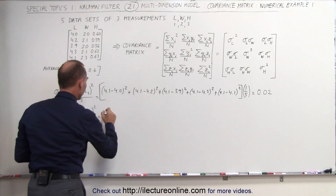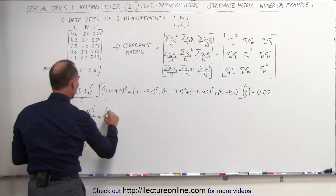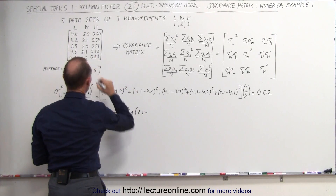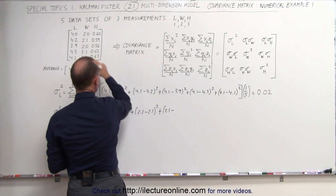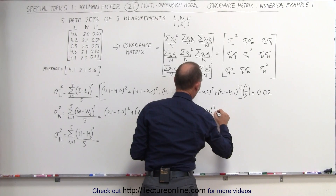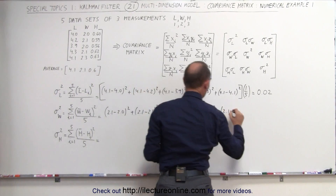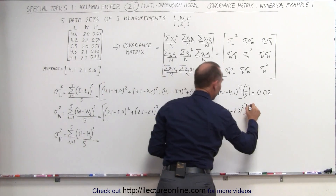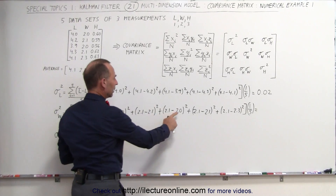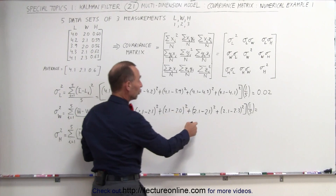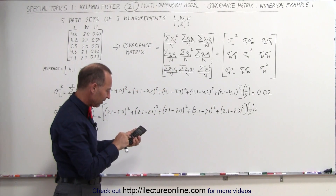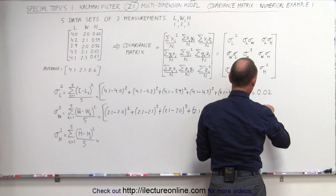We do the same for the width measurements. The average is 2.1. We subtract the first reading 2.0 and square that; plus the average minus the second reading 2.1, squared; plus the average minus the third reading 2.0, squared; plus the average minus the fourth reading 2.1, squared; plus the average minus the fifth reading 2.3, squared; and then divide the whole sum by five. We get 0.01 plus 0 plus 0.01 plus 0 plus 0.04, divided by five — that's 0.06 divided by five — and we get 0.012.